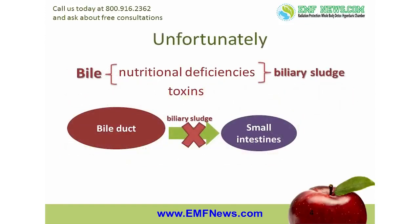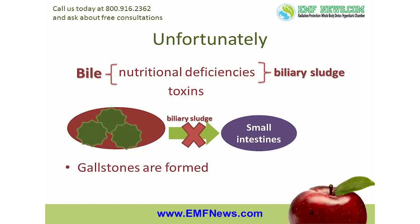That's what's supposed to happen. Unfortunately, with nutritional deficiencies and exposure to certain toxins, bile can thicken and form what is known as biliary sludge. When this biliary sludge forms, it makes it very hard for the gallbladder to get the bile into the small intestines — it's like trying to squeeze glue through a straw. It is out of this biliary sludge that gallstones are formed.